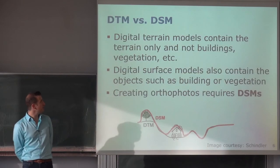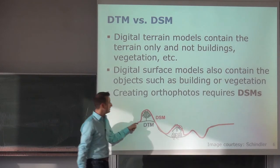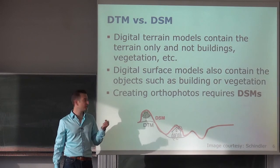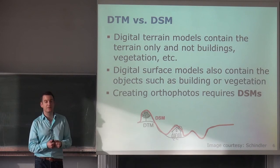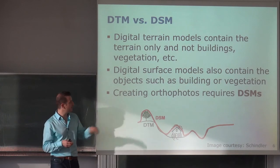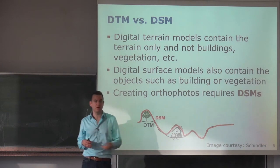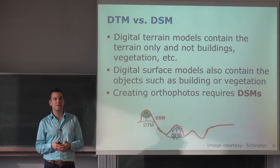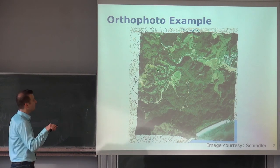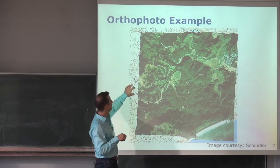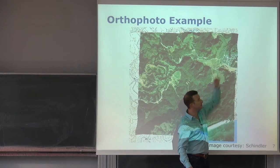An important distinction is digital terrain models versus digital surface models. The digital terrain model represents the bare terrain, while the digital surface model also accounts for artificial objects like trees and buildings. The more precise the 3D information the better — we may even want a 3D point cloud from an airborne laser scanner, which gives better results than a digital surface model. A generated orthophoto can then be overlaid with topographic maps, allowing direct distance measurement.